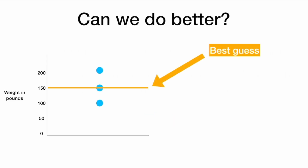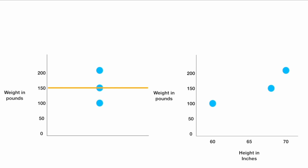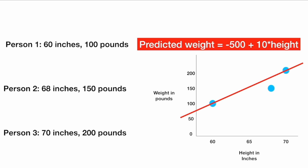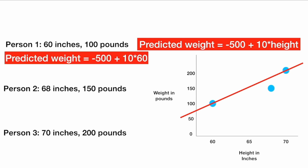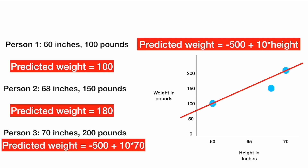So here's our best guess — the question is, can we do better? The aliens realize there is a relationship between height and weight and attempt to draw a line through the data. We have our original graph on the left and a scatter plot of weight on the y-axis versus height on the x-axis. The aliens realize we can predict someone's weight using the formula negative 500 plus 10 times their height. The person who is 60 inches tall gets a predicted weight of 100 pounds. The person who is 68 inches tall gets a predicted weight of 180 pounds. And the person who is 70 inches tall gets a predicted weight of 200 pounds.